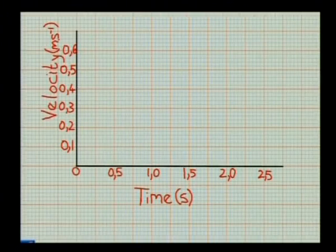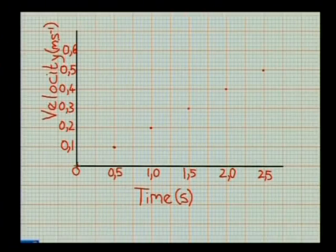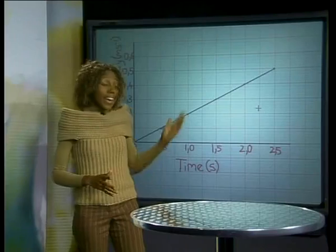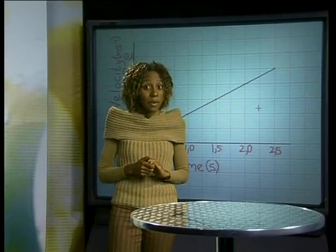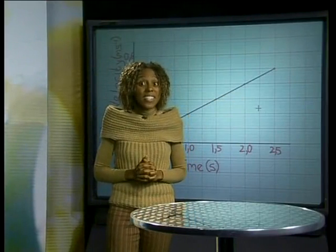Notice, at zero seconds, the velocity is zero. At half a second, the velocity is 0.1 meters per second. At one second, the velocity is 0.2, and so on. Let's look at the shape of this graph. Can you see it is a straight line graph with a constant gradient? This constant gradient tells us that the change in velocity per unit time is a constant. So, the increase in velocity is uniform.